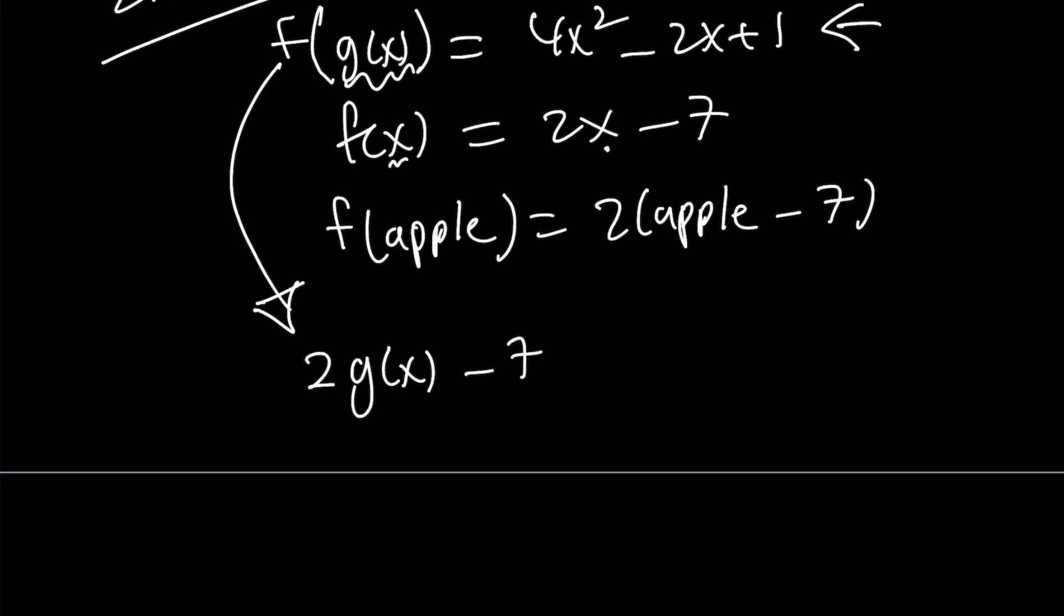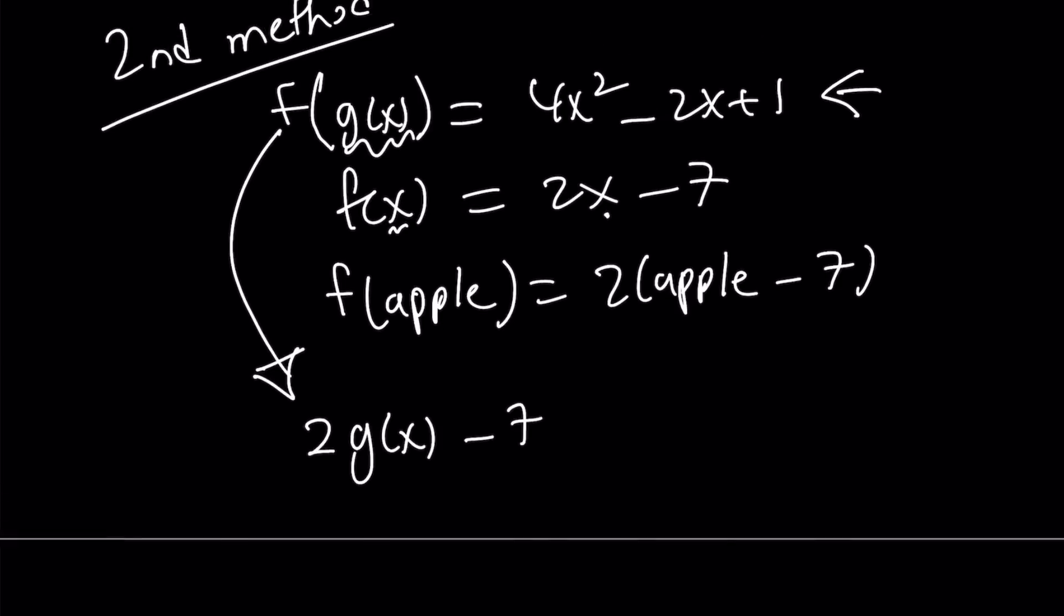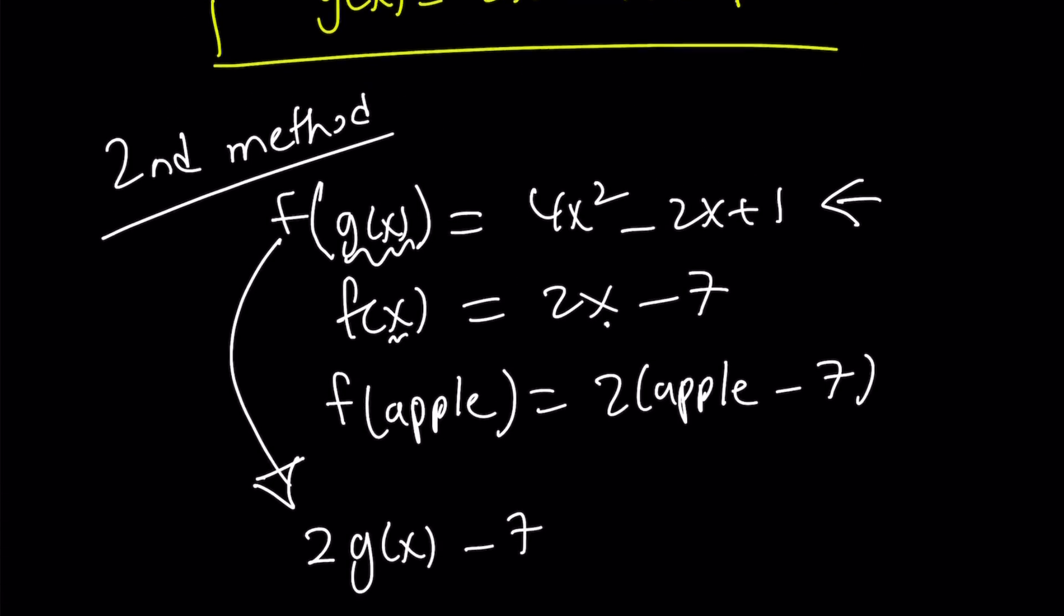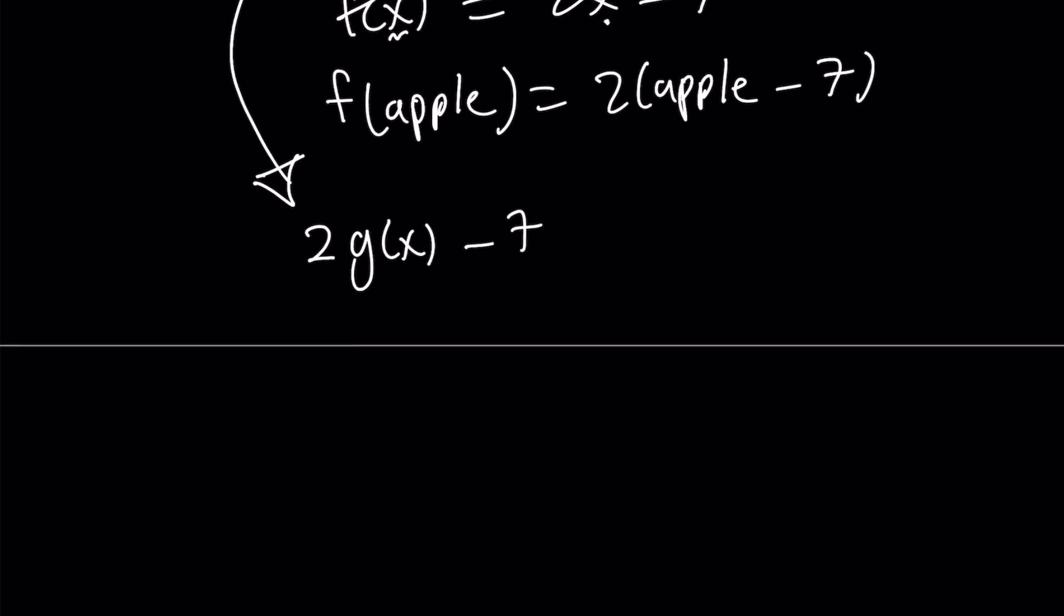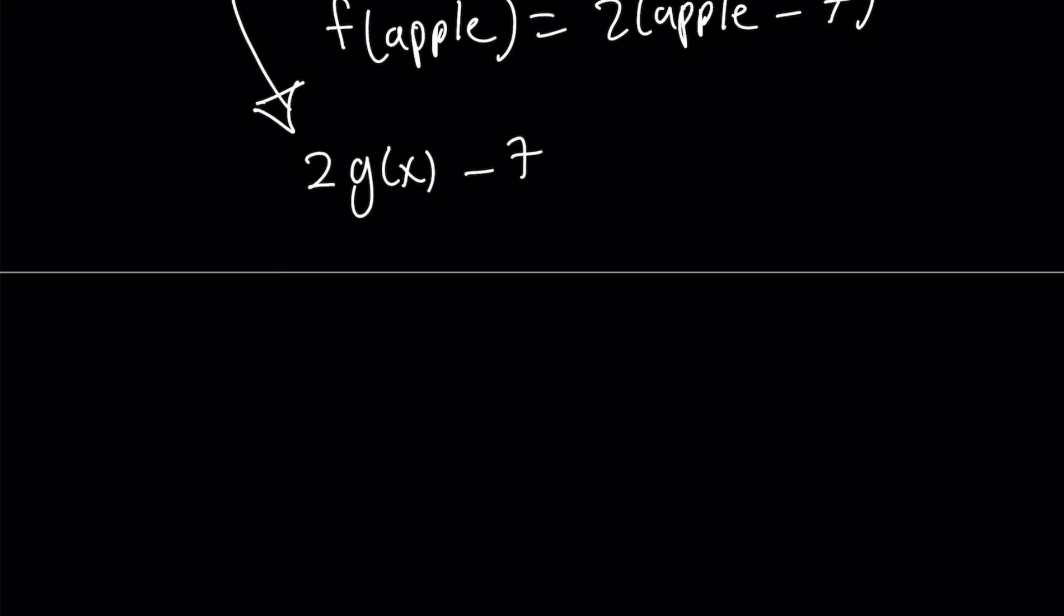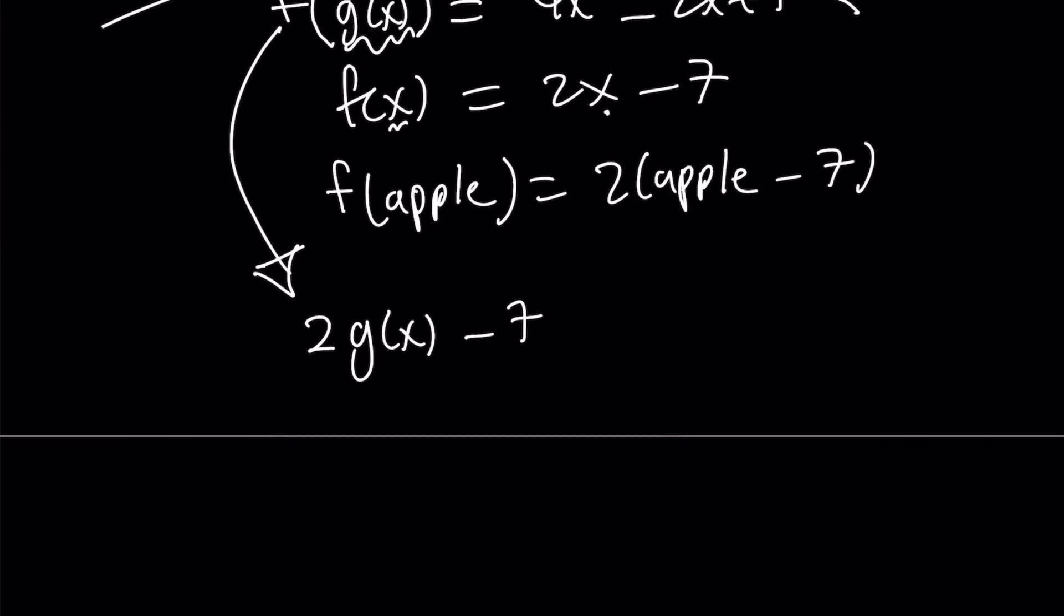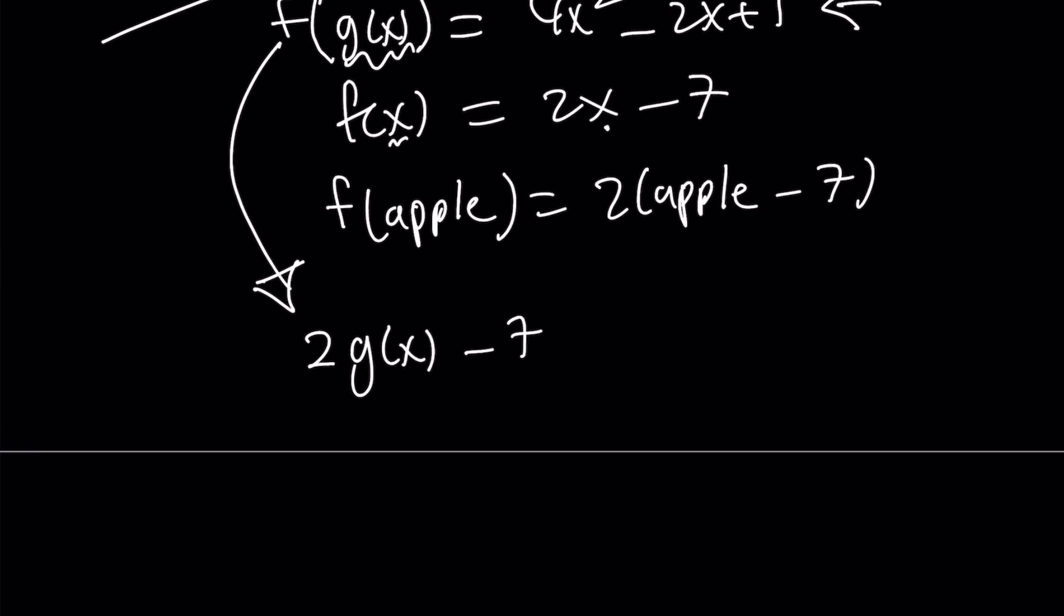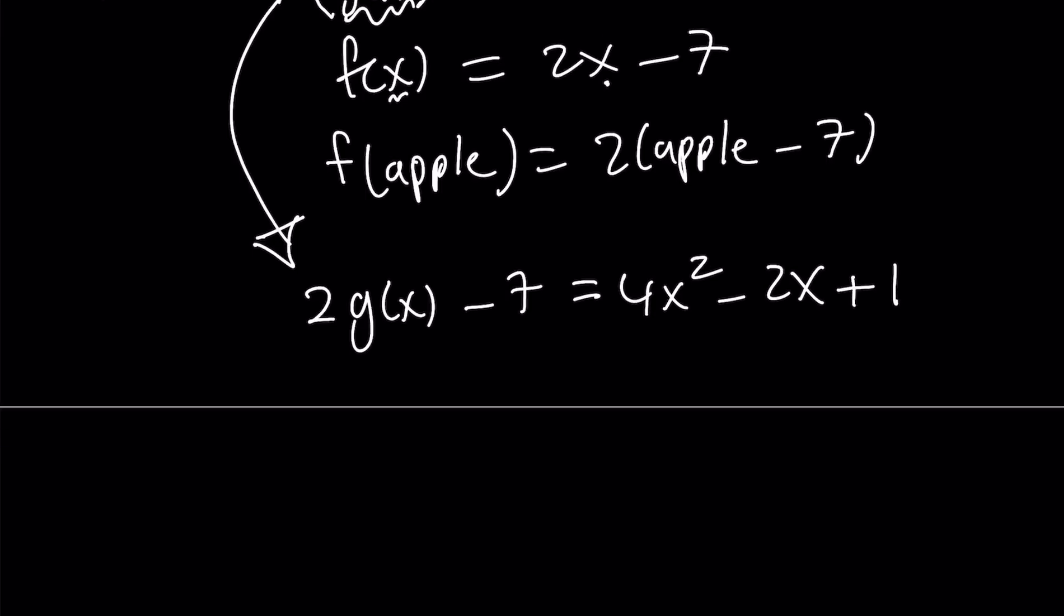So this is what I meant with the first method. I'm trying to get my expression to look like 2 times something minus 7, that something was g of x. Remember that? That's how we got g of x. Great. So 2 times g of x minus 7 is the same as f of g of x, and we know that f of g of x is equal to 4x squared minus 2x plus 1. So from here, we can find g of x, can't we?